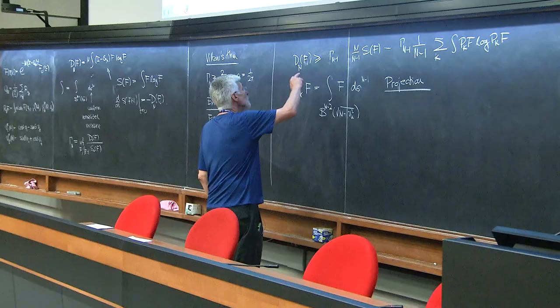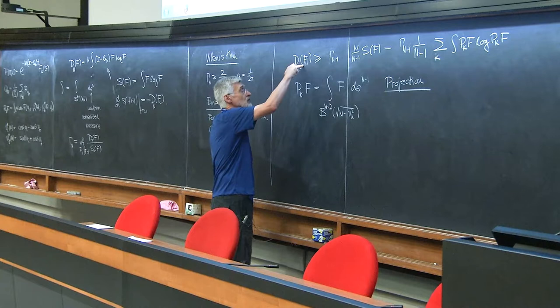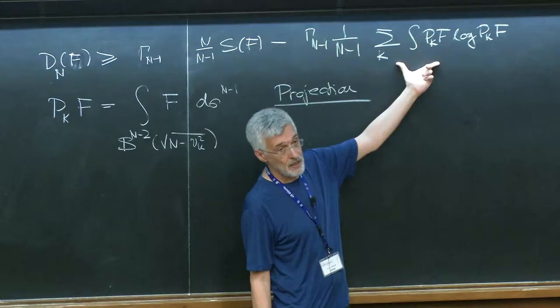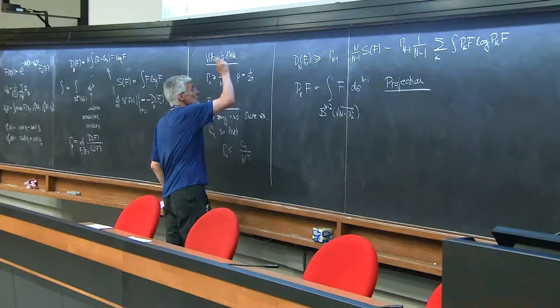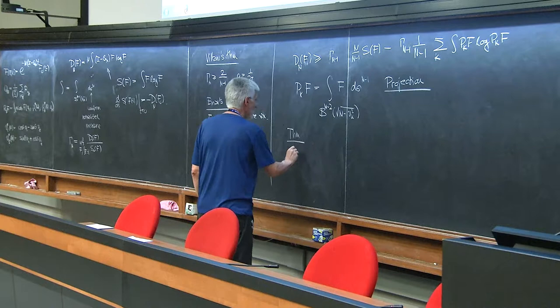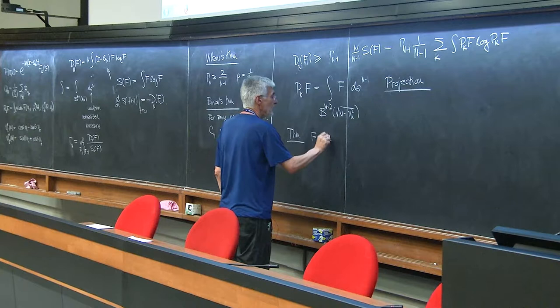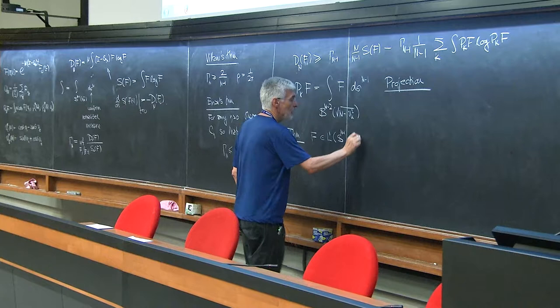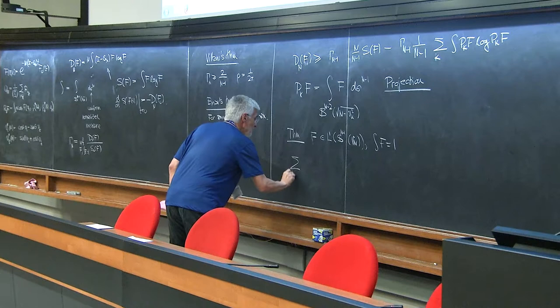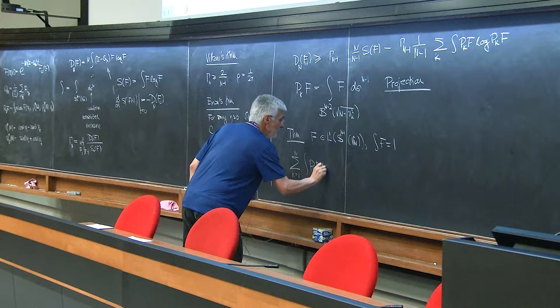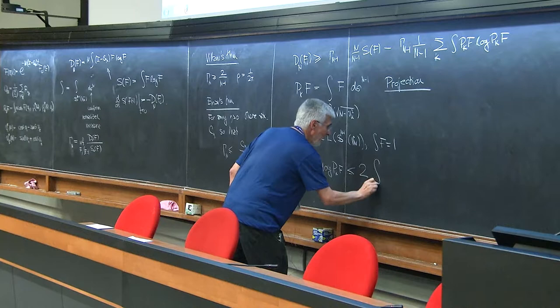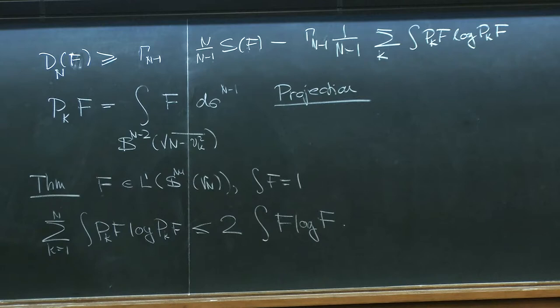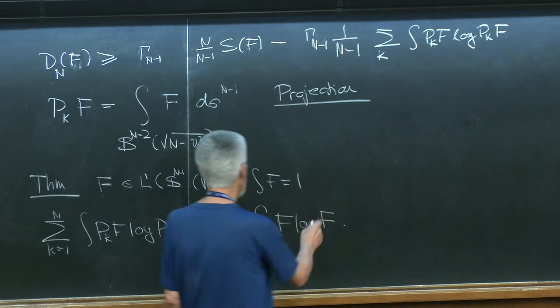Our goal is to find a lower bound on the ratio of D(F) divided by the entropy S(F). So we have to estimate the right-hand side in terms of the entropy. This is a theorem — specifically, for f in L^1 of S^{n-1} with radius squared of n, with integral of f equal to 1, the sum over k=1 to n of the integral of p_k F log p_k F is less or equal to twice the integral of F log F. This result was proved by Carlin.